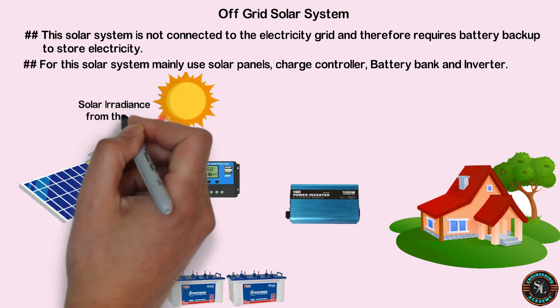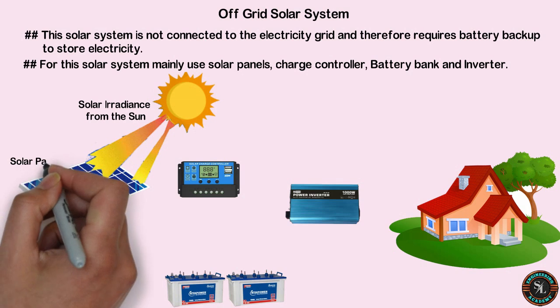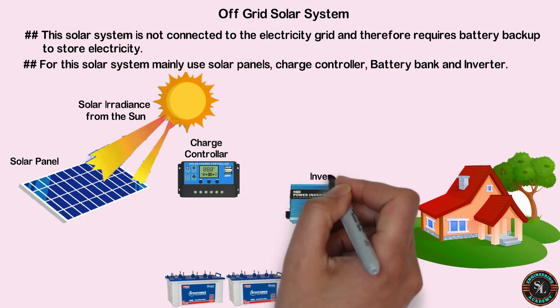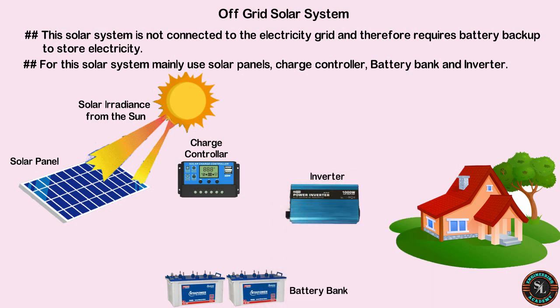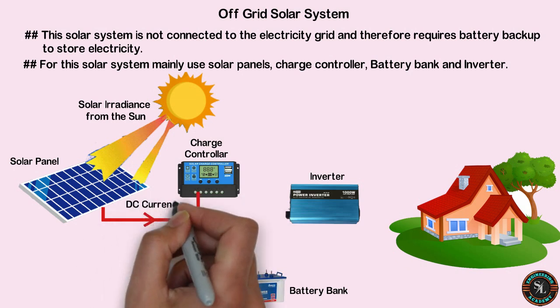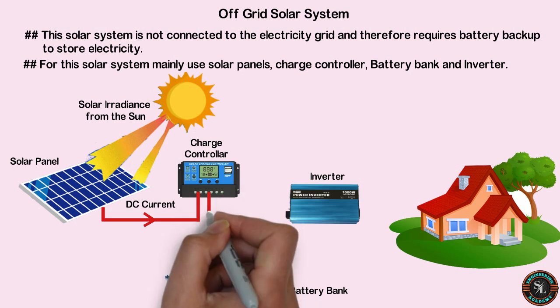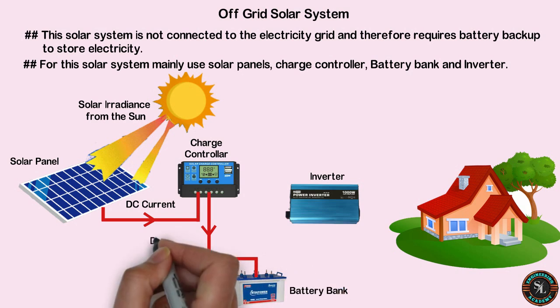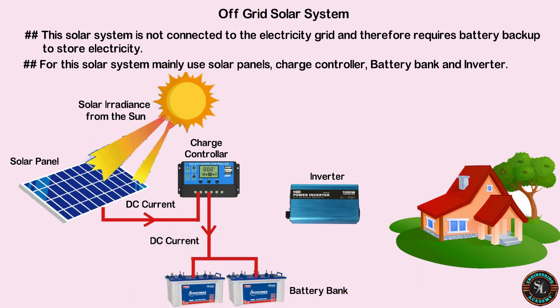In the diagram we have: solar irradiance from the sun, solar panel, charge controller, battery bank, and inverter. Solar panels generate DC current, which then goes to the battery bank through the charge controller. The charge controller is essential to protect the battery — it regulates the voltage and current that the solar battery receives to prevent overcharging and damage. During daytime, when sunlight is available, the battery bank is charged using the excess electricity generated by solar panels.